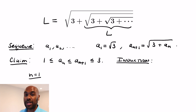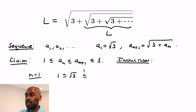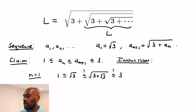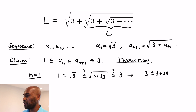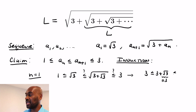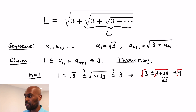We know √3 ≥ 1. For the right side, 3 ≤ 3 + √3 since we're adding a positive number, and since √3 ≤ 3, we have 3 + √3 ≤ 9. Taking square roots — since the square root is an increasing function — we get exactly the sequence of inequalities we want. That establishes the base case.